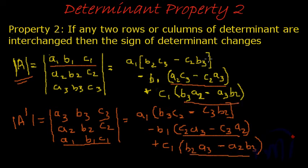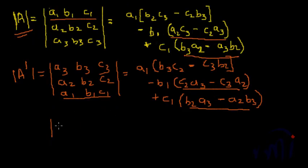So what do we see? We see that all three terms in the second expression are the negative of the three terms that you get in determinant of A. Hence, we can write determinant of A is equal to negative of determinant of A dash.